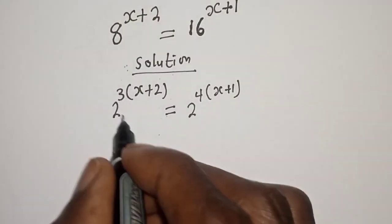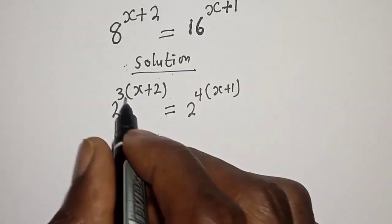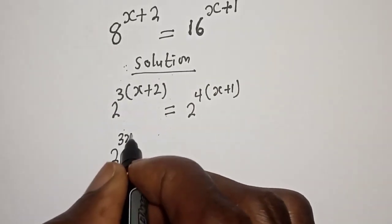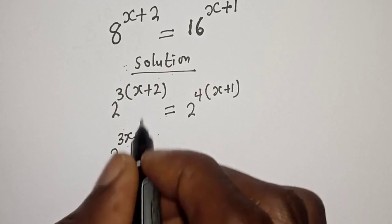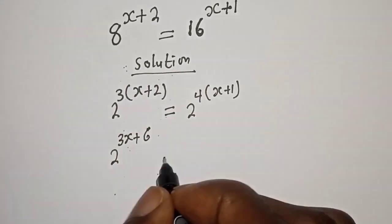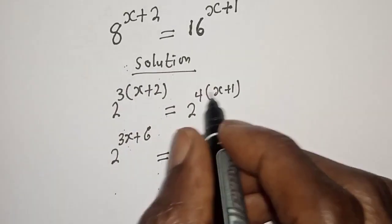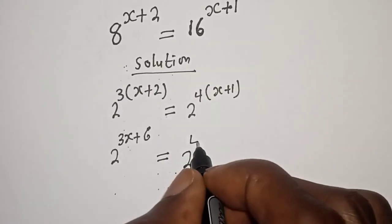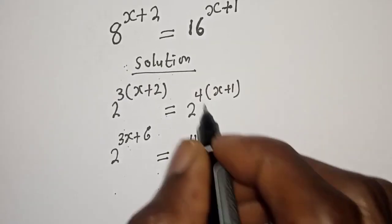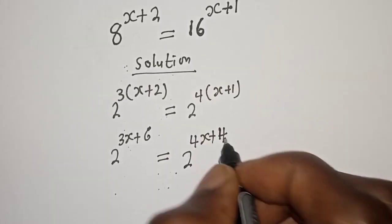Opening the bracket, we have 2 raised to power 3 times s — that is 3s — plus 3 times 2, which is 6, is equal to 2 raised to power 4 times s — that is 4s — plus 4 times 1, which is 4.